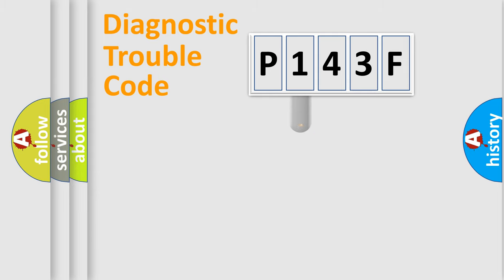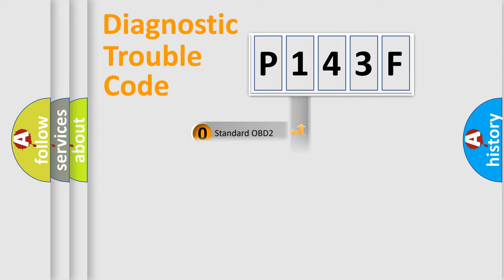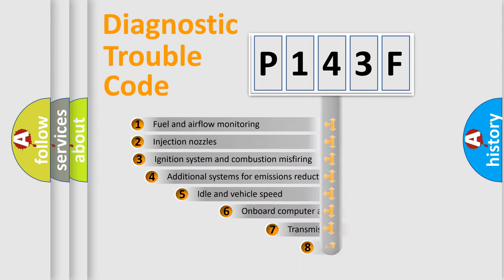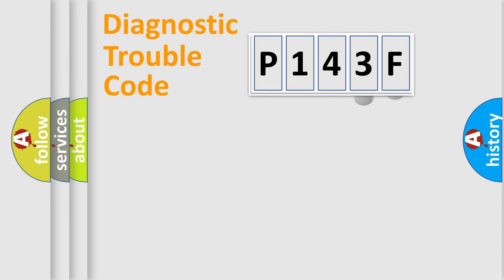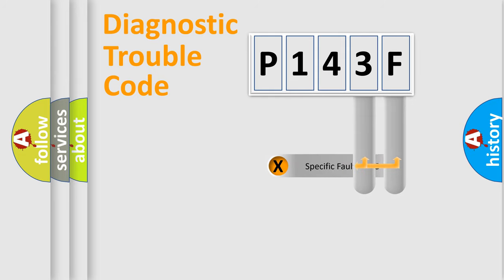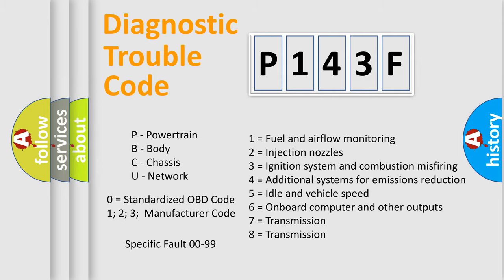This distribution is defined in the first character of the code. If the second character is expressed as zero, it is a standardized error. In the case of numbers 1, 2, or 3, it is a more manufacturer-specific expression of the error. The third character specifies a subset of errors. The distribution shown is valid only for the standardized DTC code, and only the last two characters define the specific fault of the group. Such a division is valid only if the second character code is expressed by the number zero.